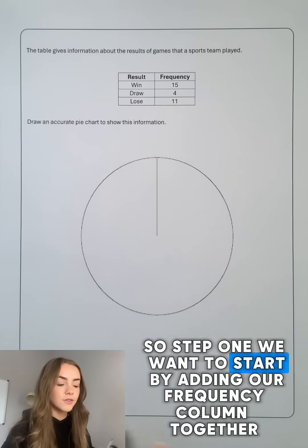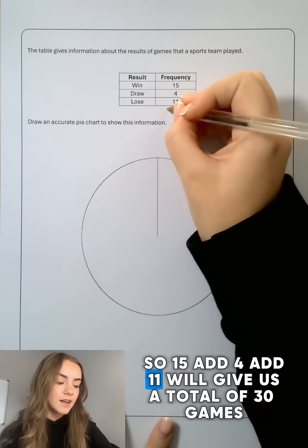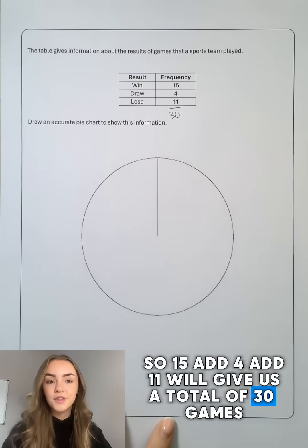Step one, we want to start by adding our frequency column together. So 15 add 4 add 11 will give us a total of 30 games.